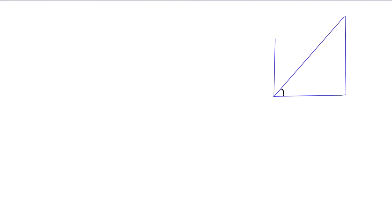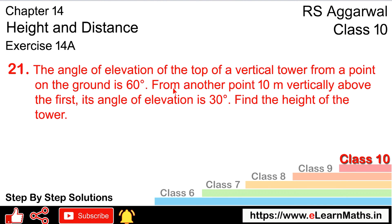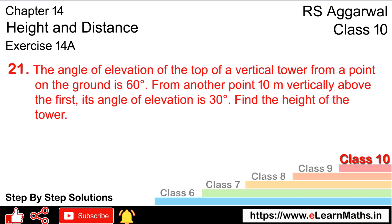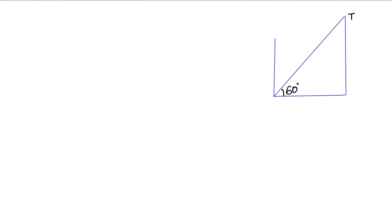So from the ground, the tower top gives a 60 degree angle of elevation. Toh maaniye yeh tower 60 degree ka elevation de raha hai. Yeh aaya 60 degree ka elevation. Ab kya keha raha hai? From another point 10 meters vertically above the first — pehle se 10 meter oopar. Its angle of elevation is 30. 10 meter oopar se angle of elevation aa raha hai 30 degree ka.